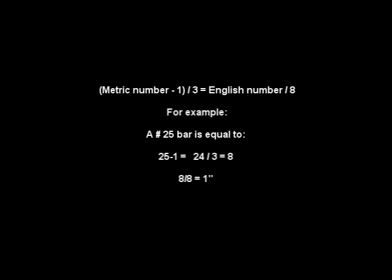To convert this number, there is a simple formula: grab the number of the rebar — we're going to use 25 as an example — subtract 1, and divide by 3. As you can see in the picture, if you had a number 25 rebar: 25 minus 1 equals 24, divided by 3 equals 8. Then, using the English system, number 8 divided by 8 gives you a 1-inch piece of rebar.